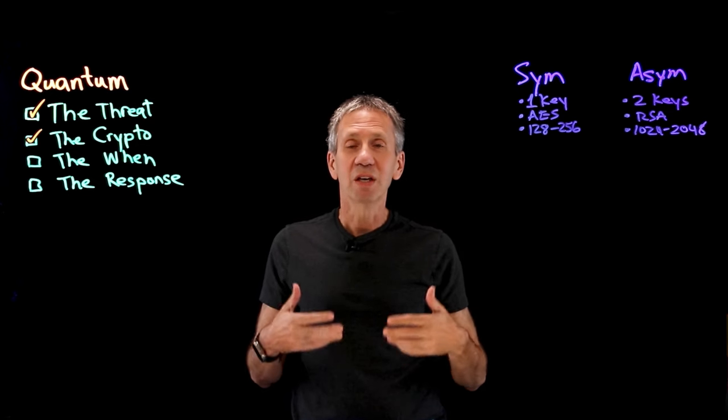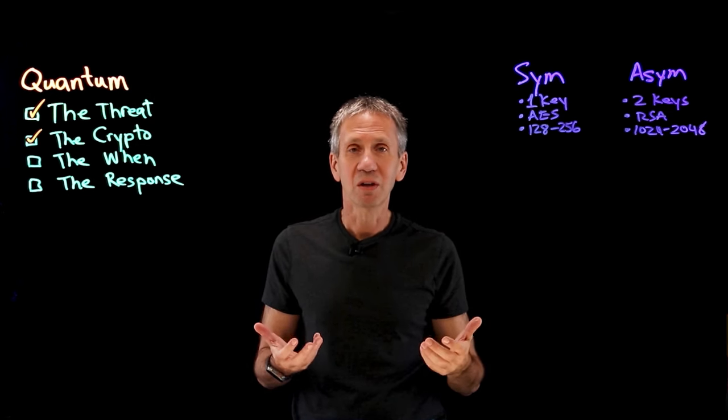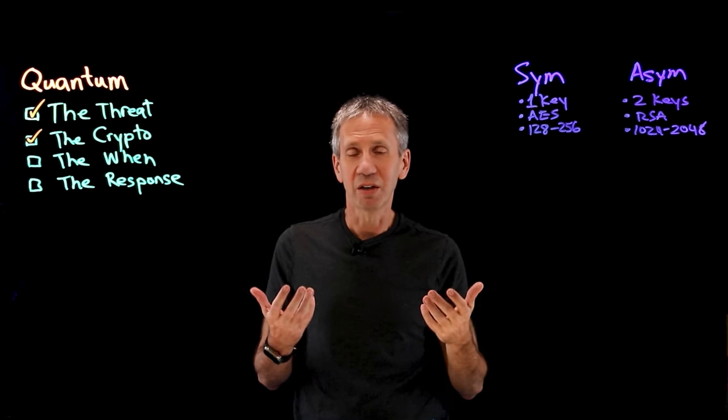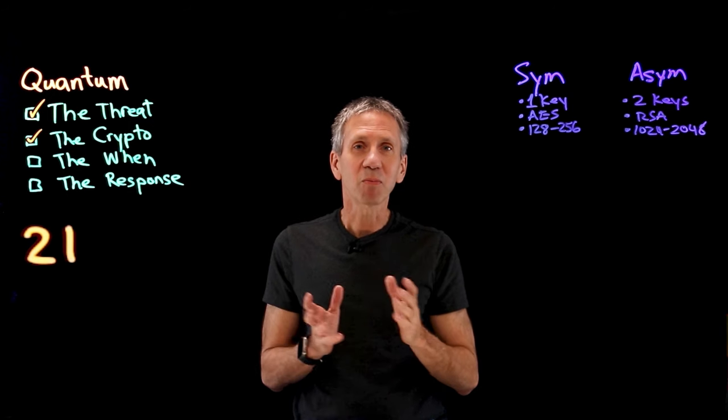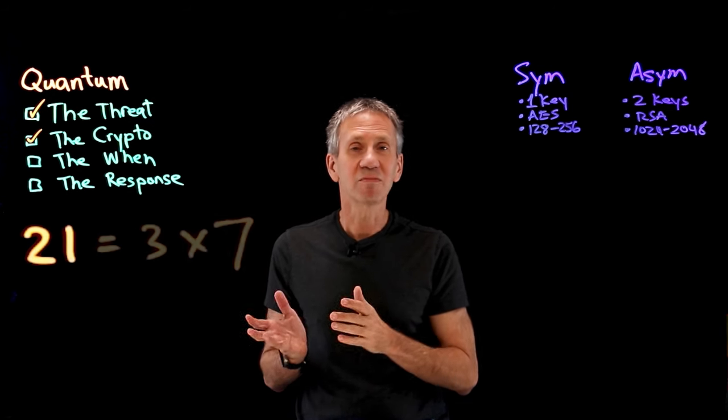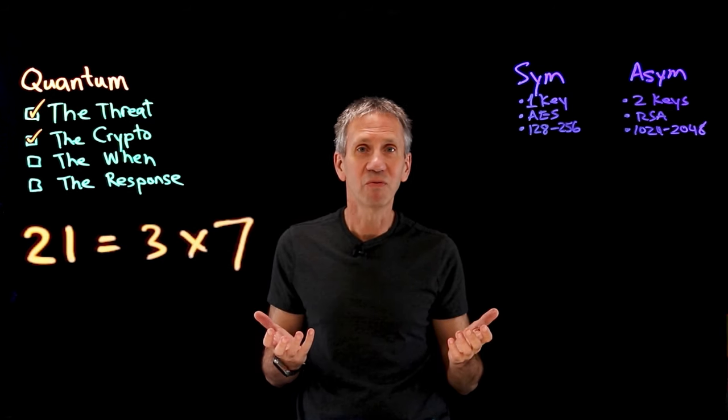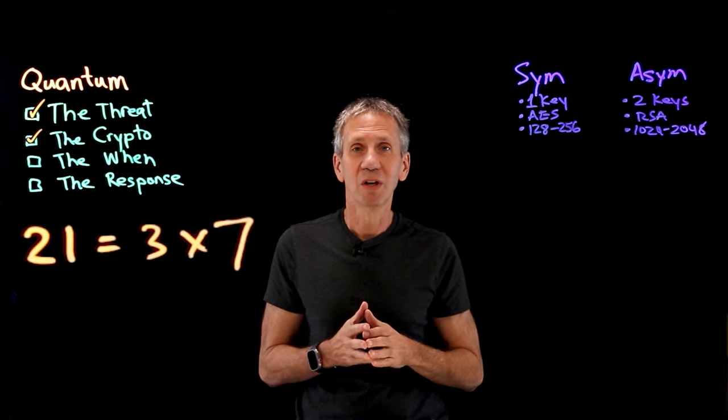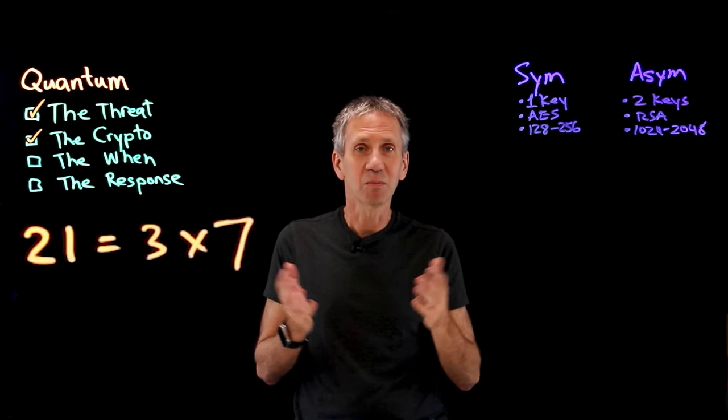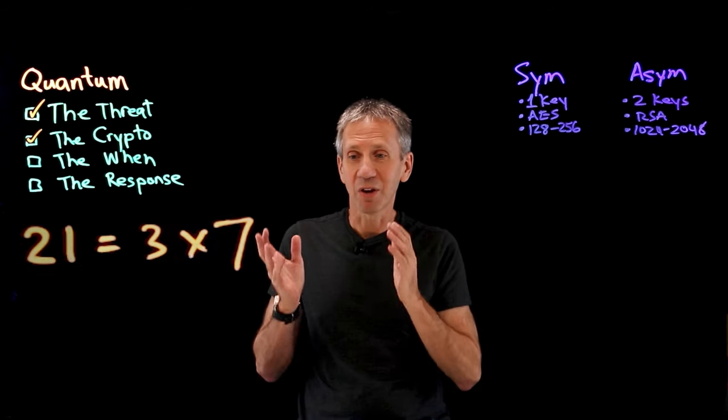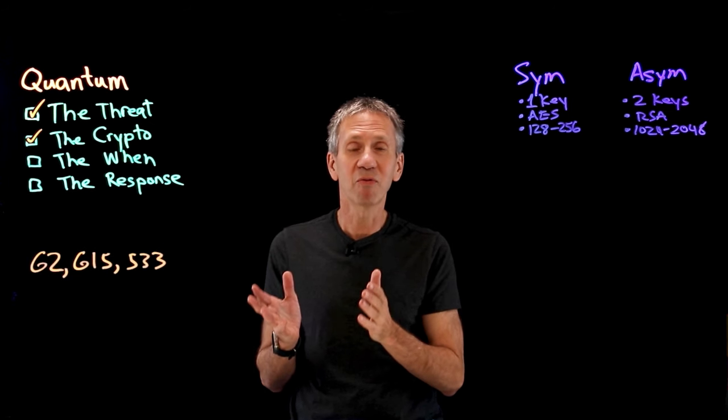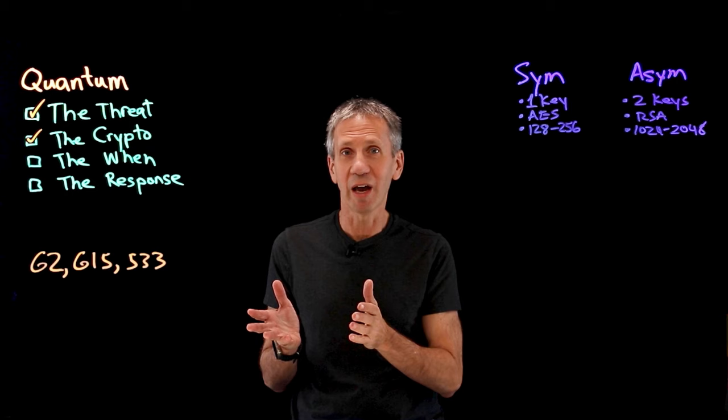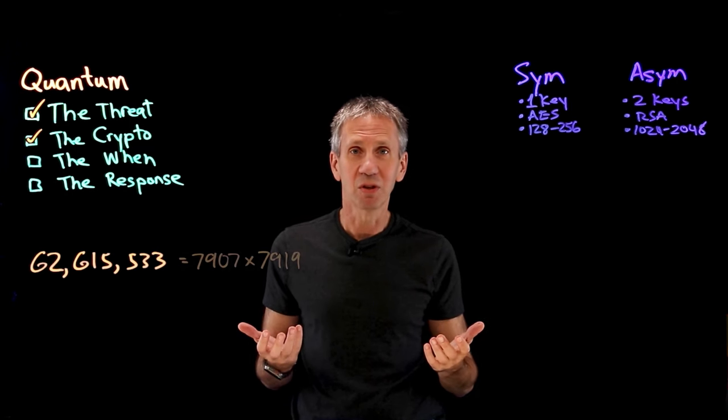One of those is trying to do factorization. If, for instance, I give you an example of a number, like 21. And I say, tell me what are the prime factors of 21? Well, 7 and 3. Not so hard to figure out. Those are both prime numbers. And they multiply together and become 21. But what if I give you a really big number like this and say, tell me what are the two large prime factors that will multiply together to equal that? Much more difficult to determine.